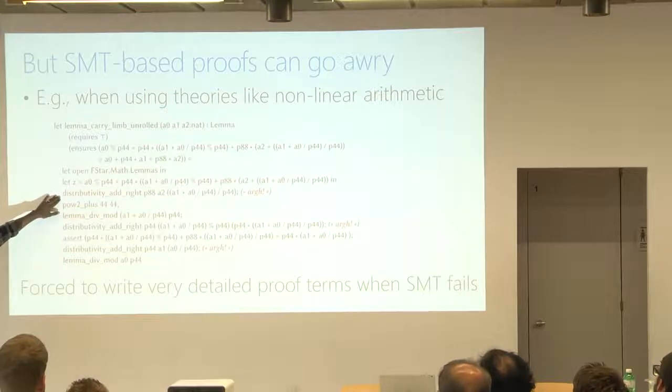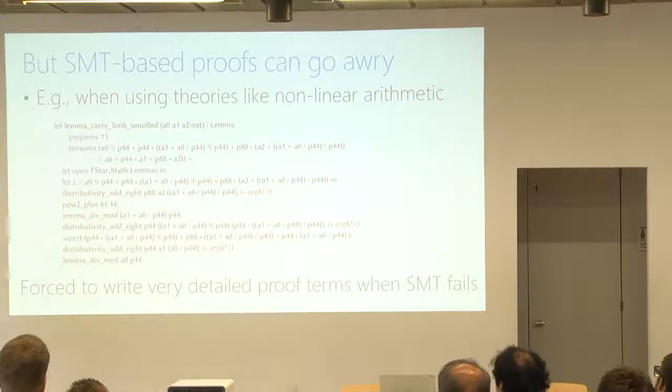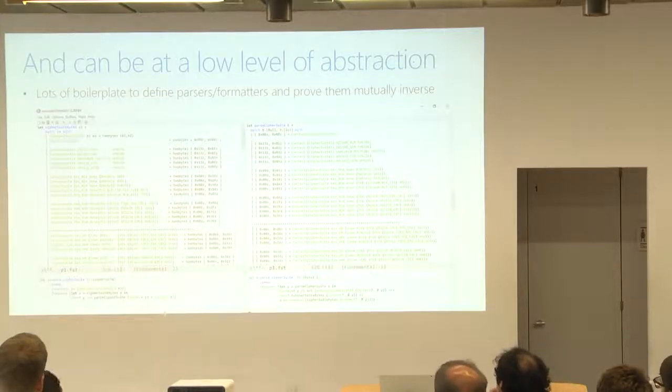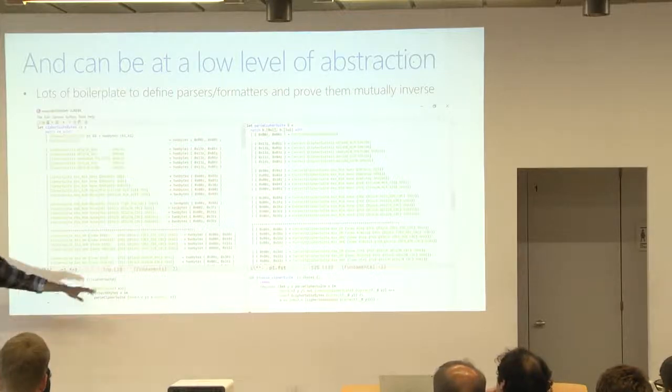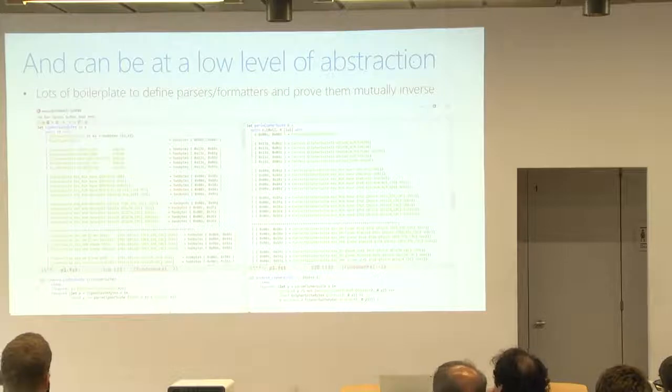Here's another example. So this is an implementation of the TLS standard for parsing and formatting cipher suites. And on the left, we have a formatter for it, and on the right, we have a parser for it. That's handwritten code. It's a lot of code, it's a lot of boilerplate. And this is F-star, so when you write this, and you're trying to do a proof about TLS, in addition to all this boilerplate code, you have to write proof that says that these two functions, for instance, are mutually inverse. So that's even more handwritten proof. So these proofs can sometimes be at a very low level of abstraction as well.